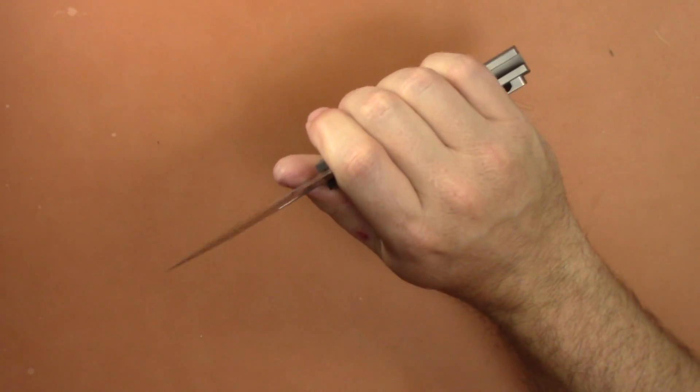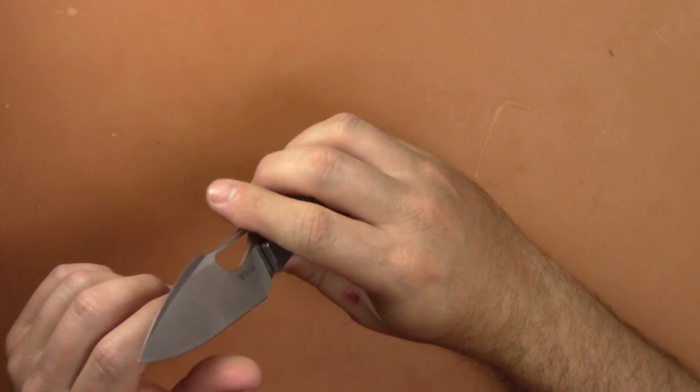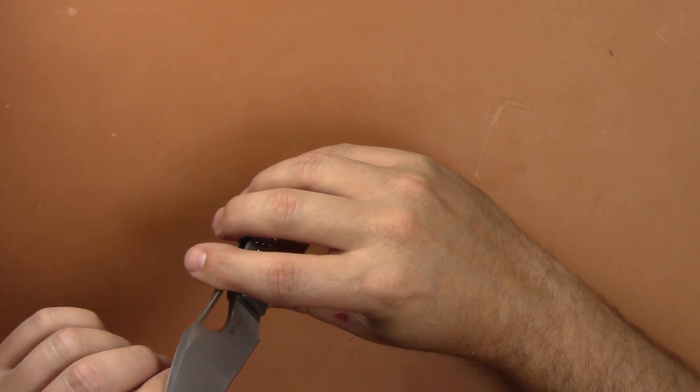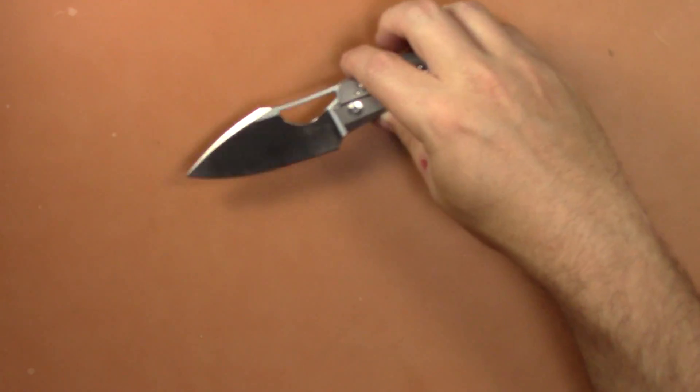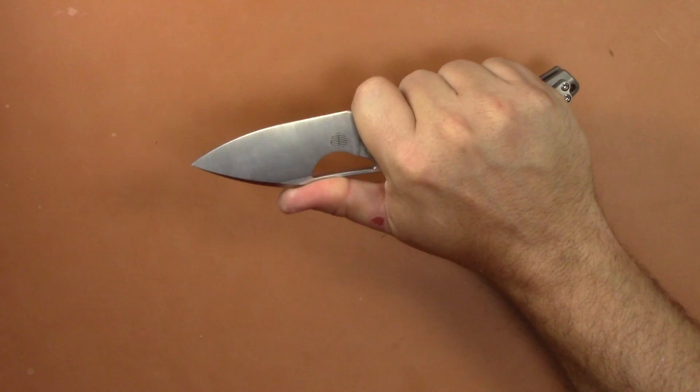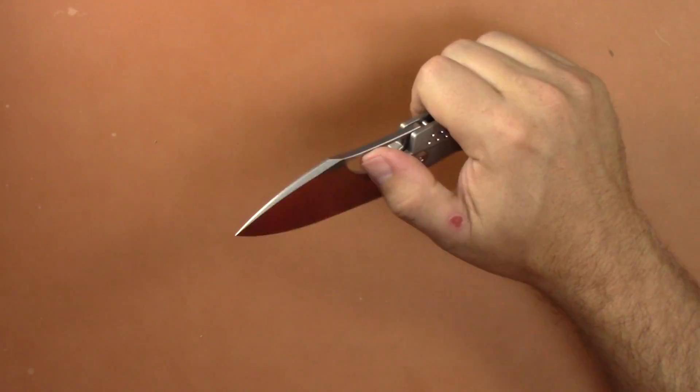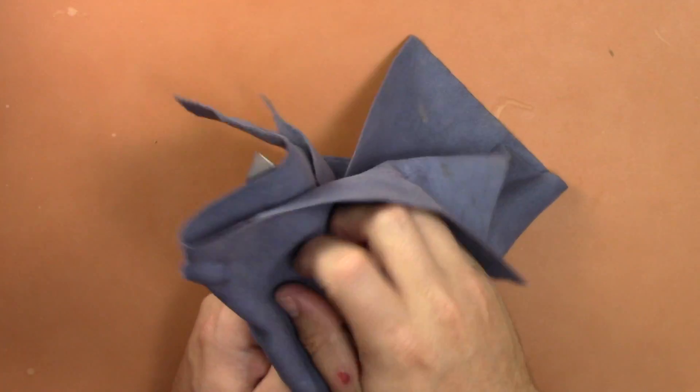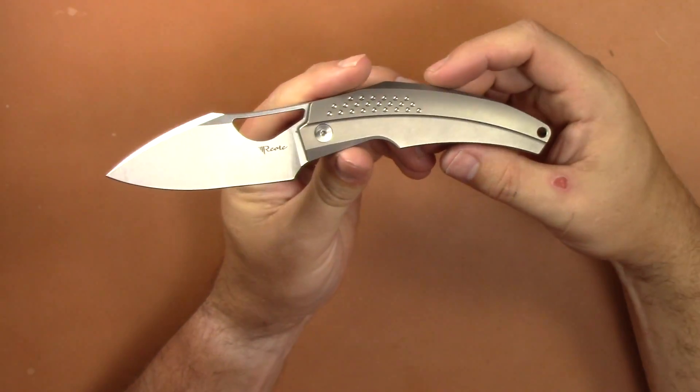And then let's do the thinness behind the edge. So it's ground pretty thin, .02 behind the edge, not bad at all. Should be and it is a good slicer, it slices really well. I've cut up, I broke down a ton of boxes, just glided through that cardboard, the edge is still pretty sharp. I did quite a bit of food prep with this as well. It worked really well in that aspect of the knife's performance. It's definitely an all around use EDC knife, it's not limited to one type of use.